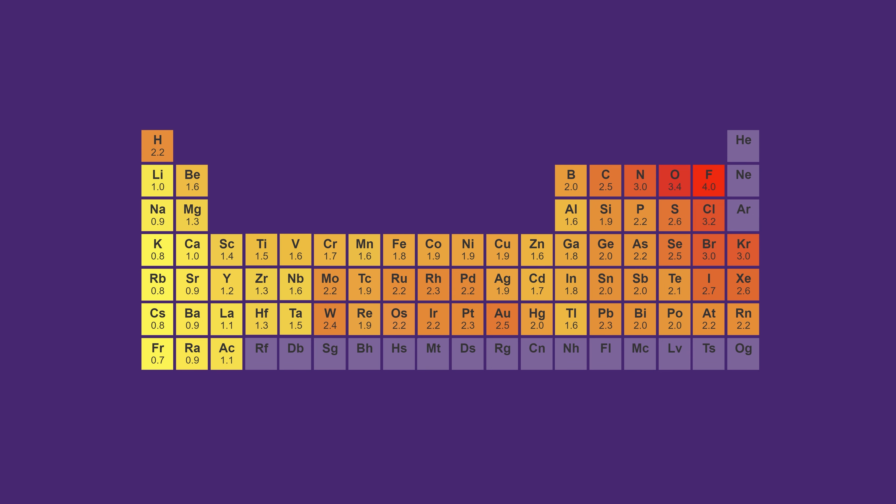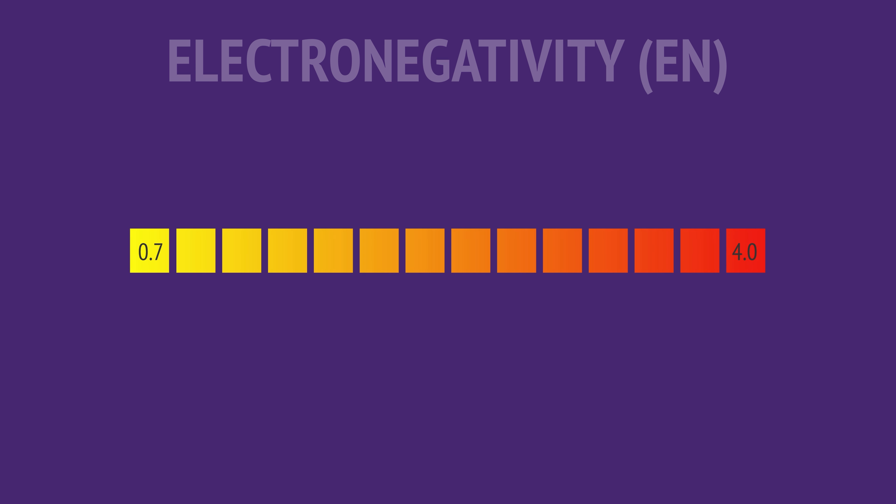In this video, we'll introduce the property of electronegativity, why it affects chemical bonding, and how it changes across the periodic table.